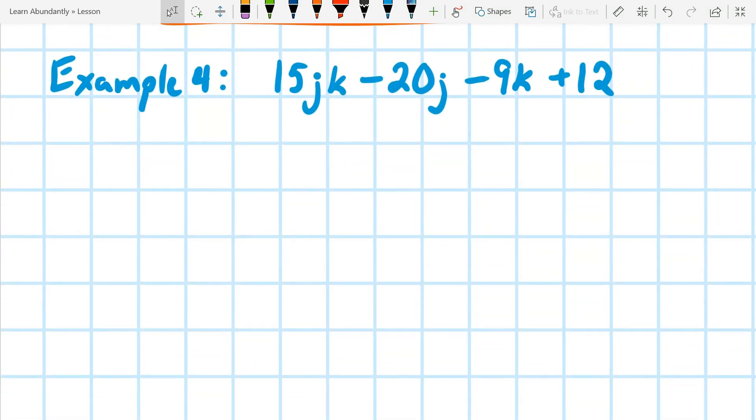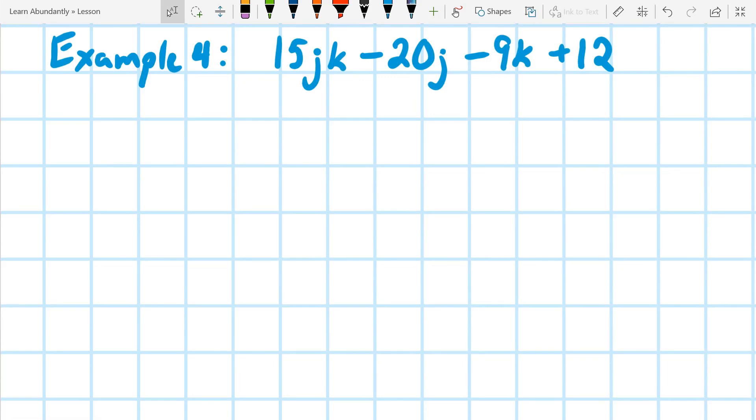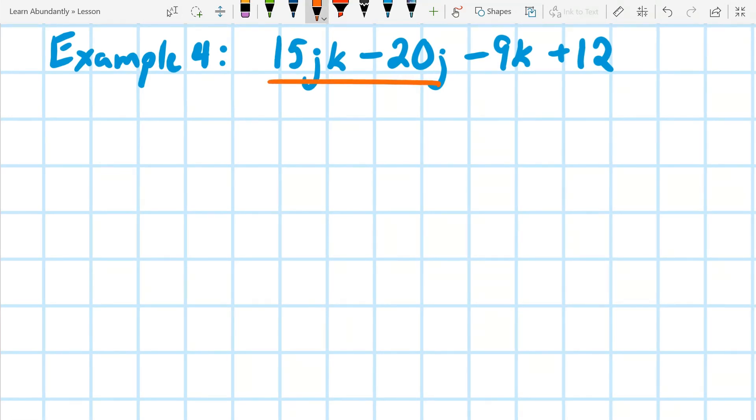Well, another thing they could do is give you two different variables. So you notice there's no squares or cubes in this one, but we have j's and k's. So if we start pulling this apart, I'm going to leave it in the order it's in, because we have the two j's right up front. So I know I can take 5j out of here.